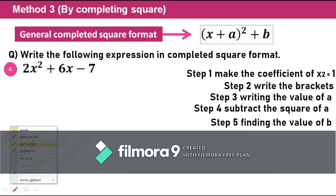This question is different from the previous one — the coefficient of x² is not equal to 1. Whenever we have a question where the coefficient of x² is not equal to 1, there is only one extra step; the rest of the steps are the same. I have to make the coefficient of x² equal to 1 by taking the coefficient as a common factor.